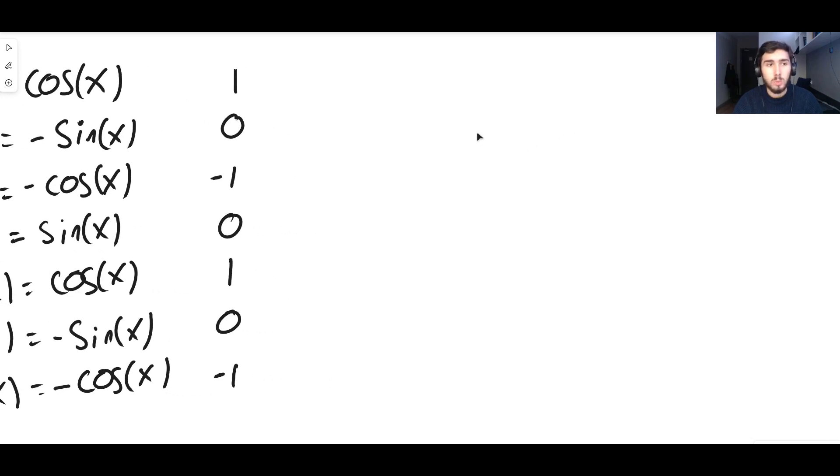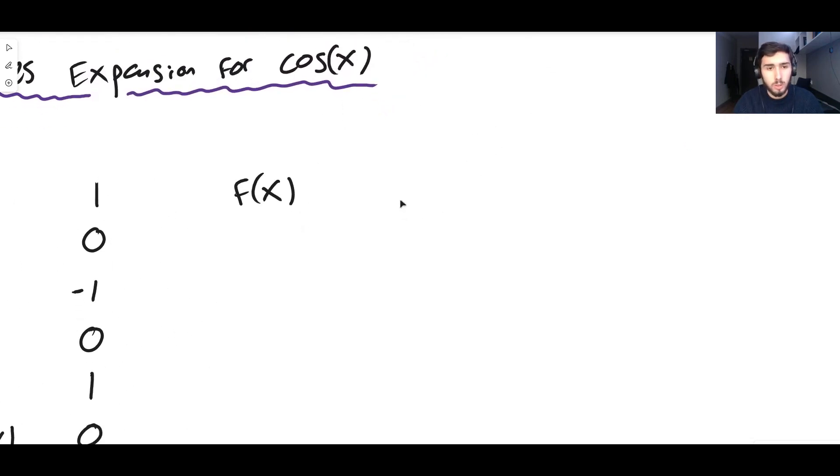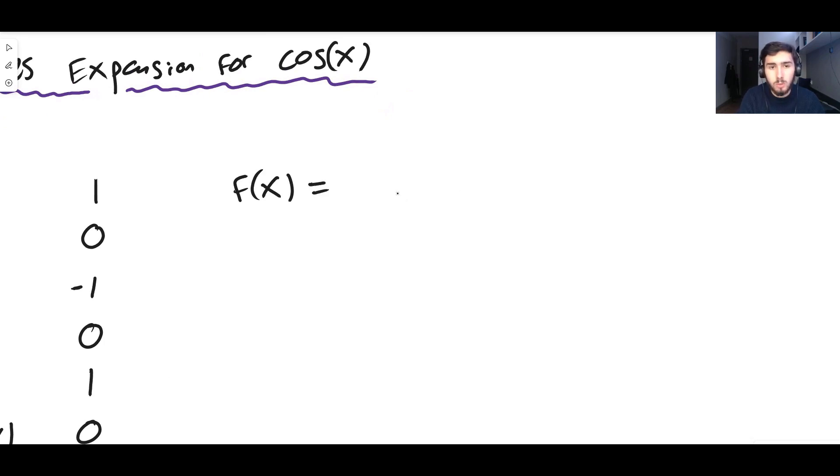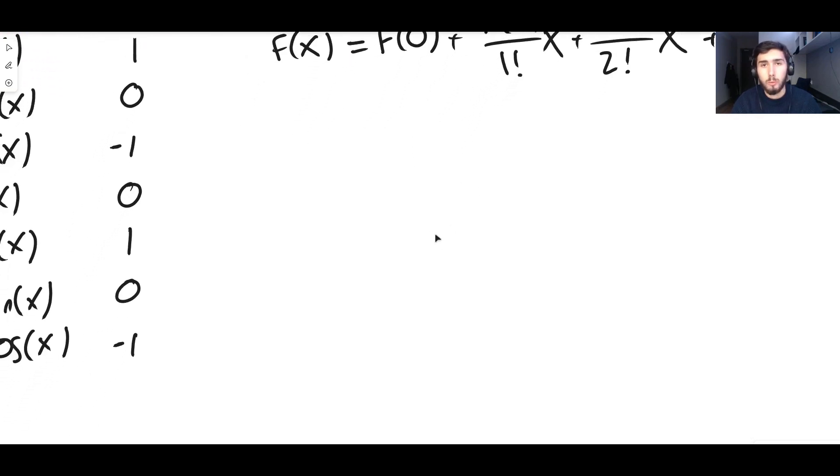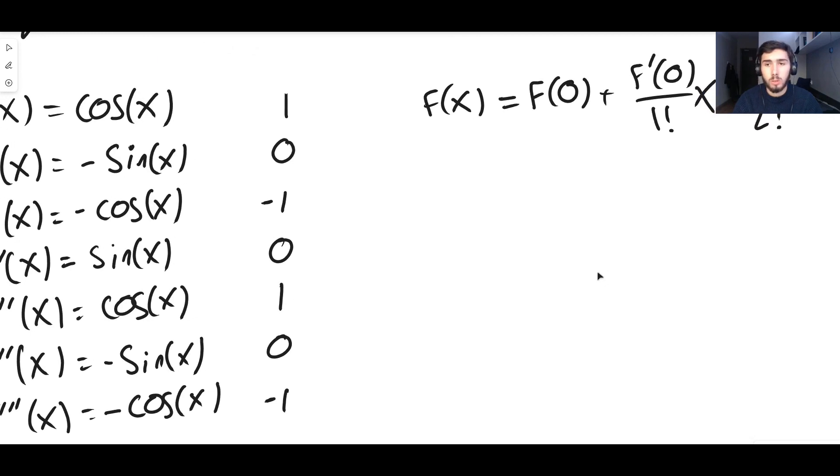So what we now do is simply substitute this into the formula for Maclaurin series. The formula for Maclaurin series says that f of x is equal to f evaluated at zero, plus the first derivative evaluated at zero divided by one factorial times x, plus the second derivative evaluated at zero divided by two factorial times x squared, plus the third derivative evaluated at zero divided by three factorial times x cubed. Goes on forever, right? That's the pattern, we know it, we've seen it before from episode one of Maclaurin series.